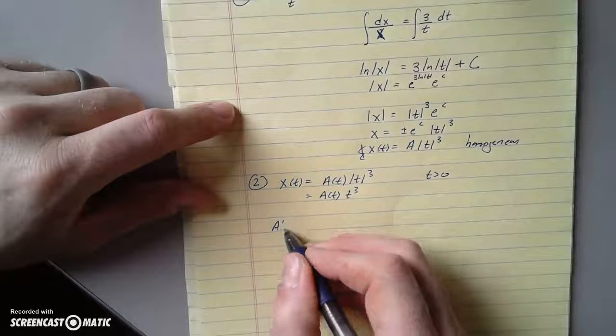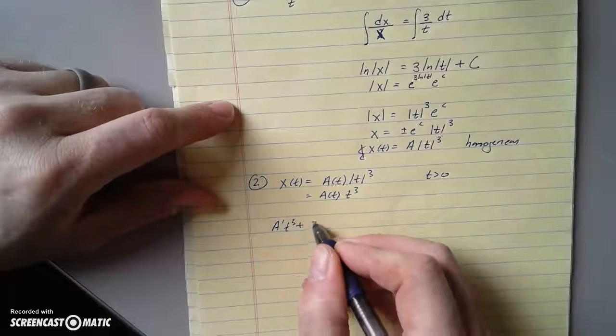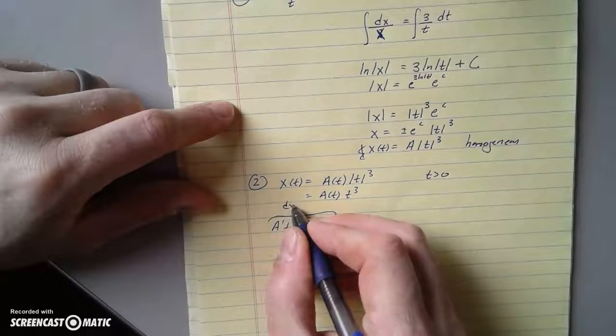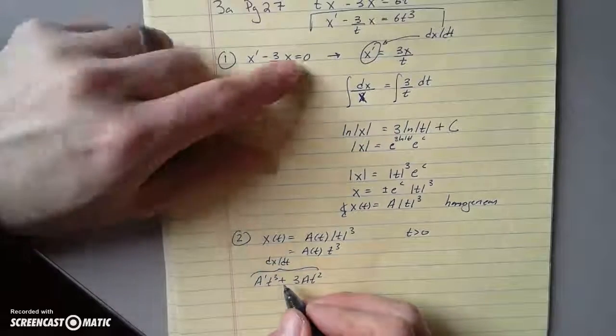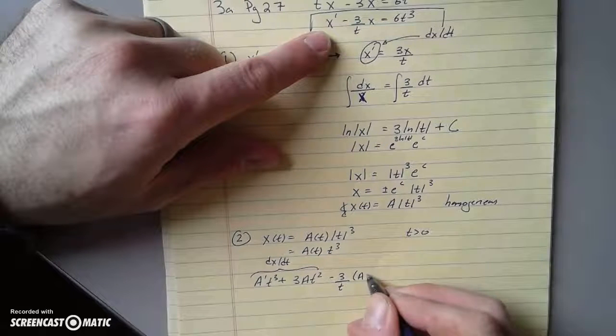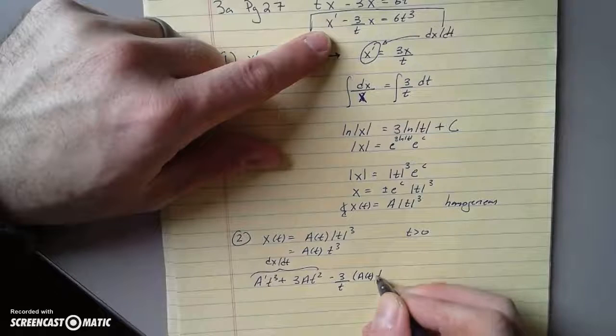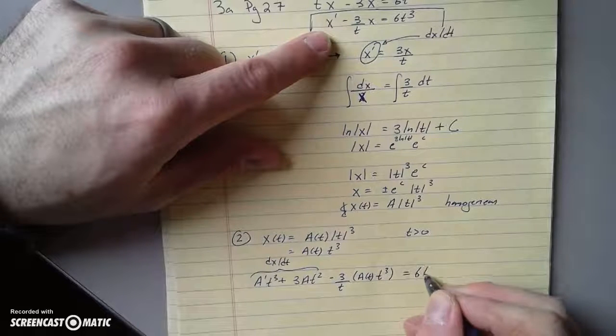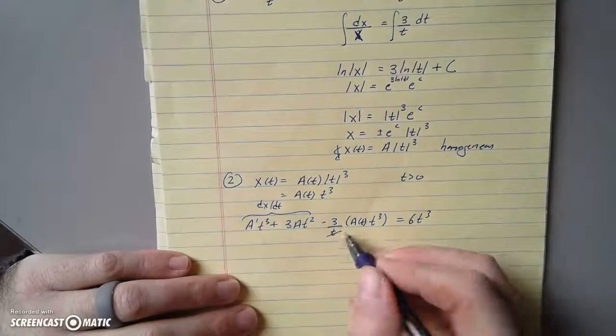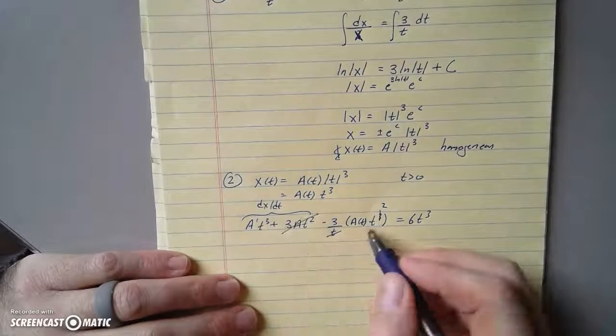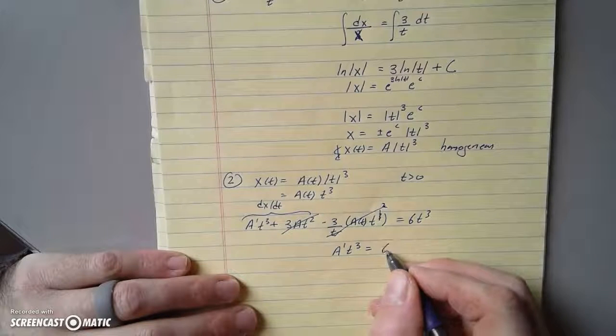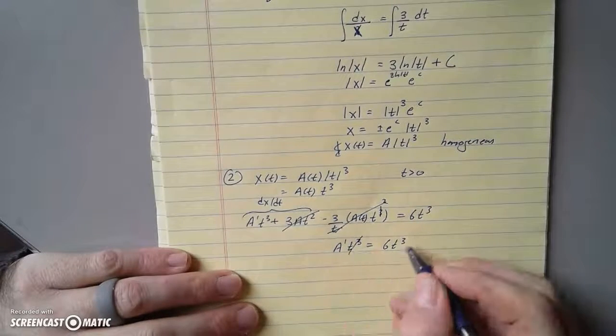This is usually the case for applications. So in this case, if we substitute it back into our original equation, then we're going to have a product rule: a'(t)t^3 + 3a(t)t^2. This is dx/dt, right, is our x'. And then minus 3/t times a(t)t^3 equals 6t^3. And the idea is that we simplify. These two terms cancel, and we're going to have a condition on a'. And this condition ends up to be pretty easy.